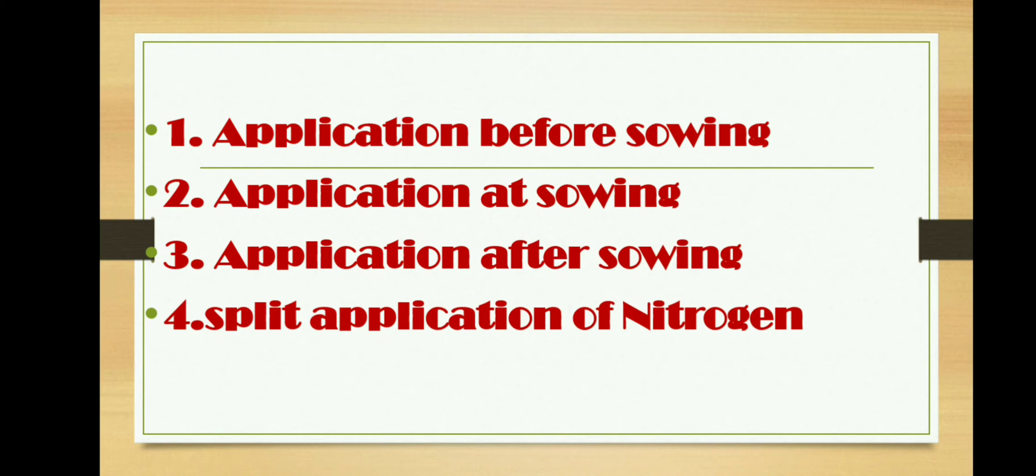Coming to the last one: split application of nitrogen. Application of nitrogen in splits—that is, in small doses for many times at the critical stages when the crop requirement is high—is known as split application of nitrogen. This avoids wastage of fertilizer and avoids excess input of fertilizer in the soil.